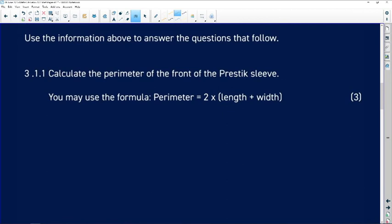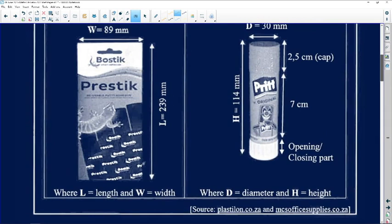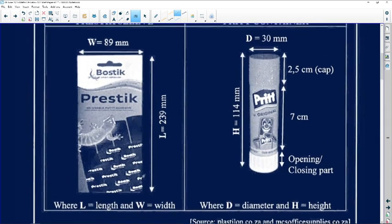Calculate the perimeter of the front of the Prestig sleeve. Firstly, perimeter is just an addition of all the sides. The nice thing about Math Lit is that you get your formulas. We've been given the formulas. So that's going to be two times length. So for the Prit plastic, the length is 239 millimeters.